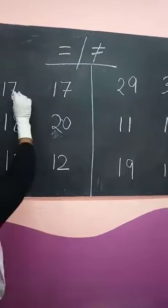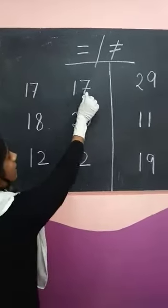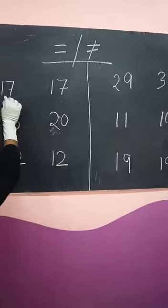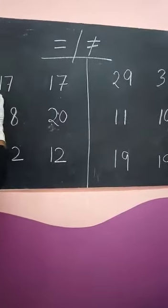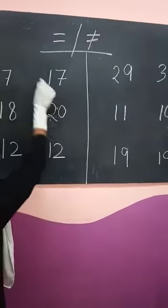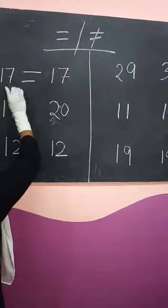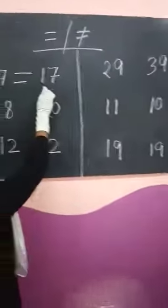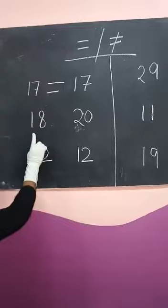when the two sides are same, like this side 17 and this side 17. That means these numbers are equal to. Dono same same hai, dono ek hi jaisi hai. Now see,